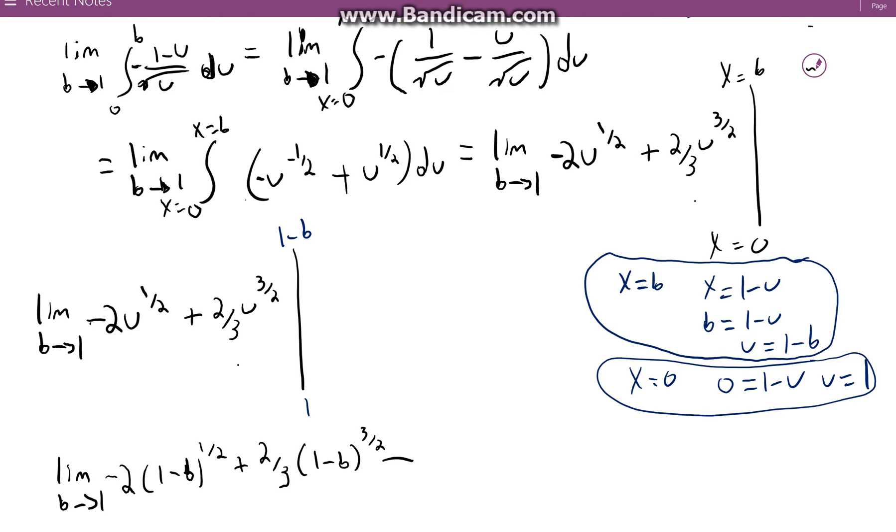So this whole, both these terms here just evaluate to 0. And so we have minus negative 2 and then 1 to the 1 half plus 2 thirds, 1 to the 3 halves.